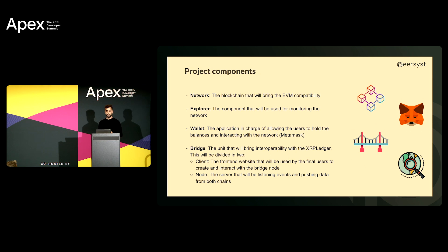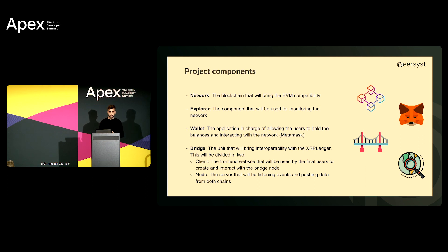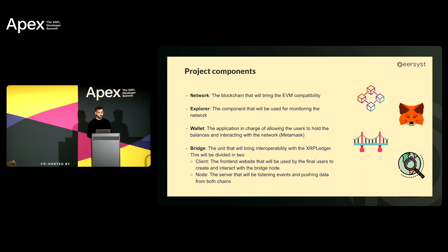The bridge is divided into two subcomponents: the client and the node. The client is responsible for providing users a friendly frontend where they can interact — very UX and UI friendly. The node works behind the scenes, listening to both chains, listening to events happening there, and communicating and pushing data from one chain to the other.